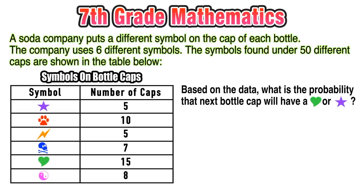By looking at that table, we can see that some symbols come up much more often than others. We have to use that data from the table to find the probability that the next bottle cap will have either a green heart or a purple star.